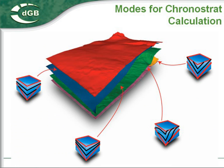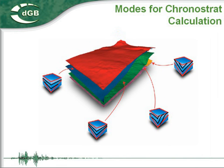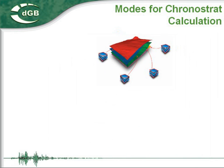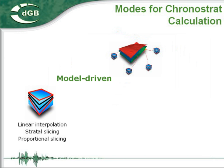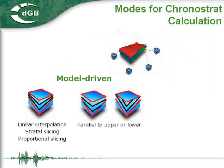Sys supports two basic modes for calculating grounor stratigraphy: model-driven and data-driven. In model-driven mode, grounor stratigraphic horizons are inserted between mapped top and base horizons. This can be done by interpolating the thickness between the mapped horizons. This option is also known as stratigraphic slicing or proportional slicing.